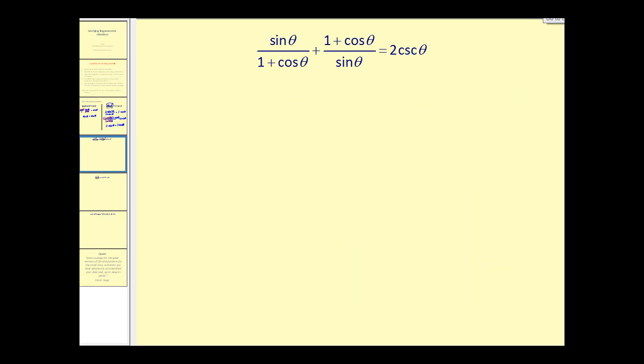Let's go ahead and take a look at a couple more. Now again, we're going to work with the more complicated side. But the question really becomes, what can we do to the left side to make it look like the right side? Often there are several ways to verify an identity. What comes to mind for me here is multiplying this fraction by the conjugate. Let's go ahead and do that first.